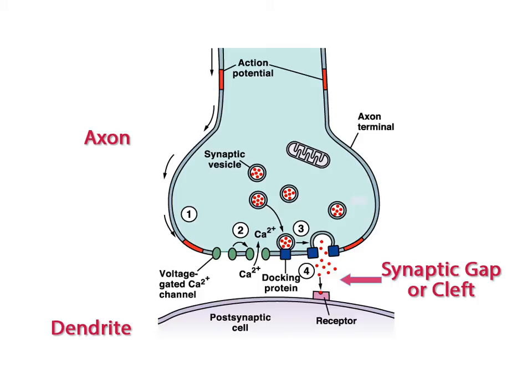Electrical conduction carries an impulse across synapses in the brain, but in other parts of the body impulses are carried across synapses as the following chemical changes occur.